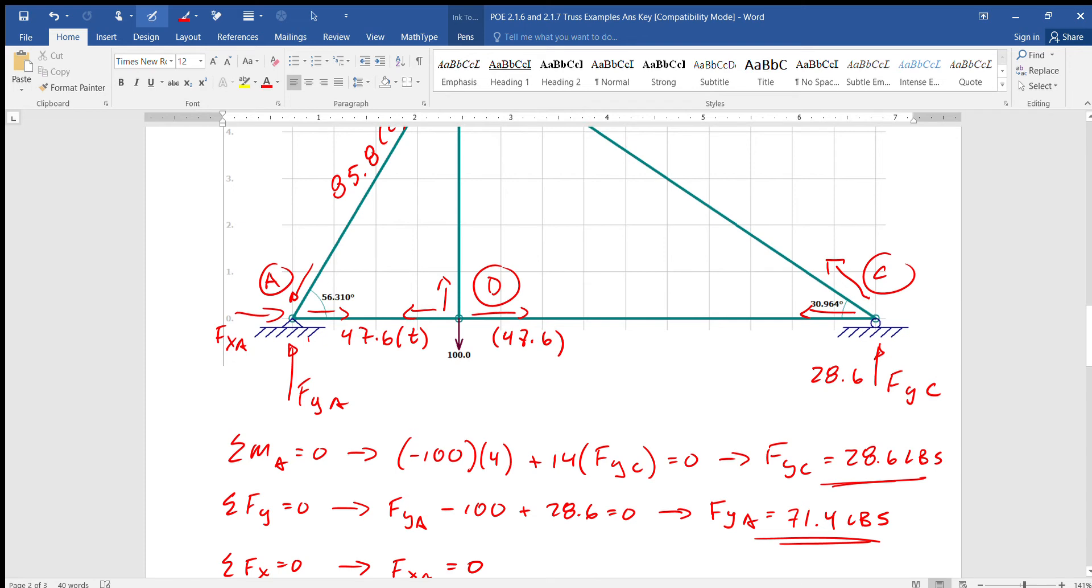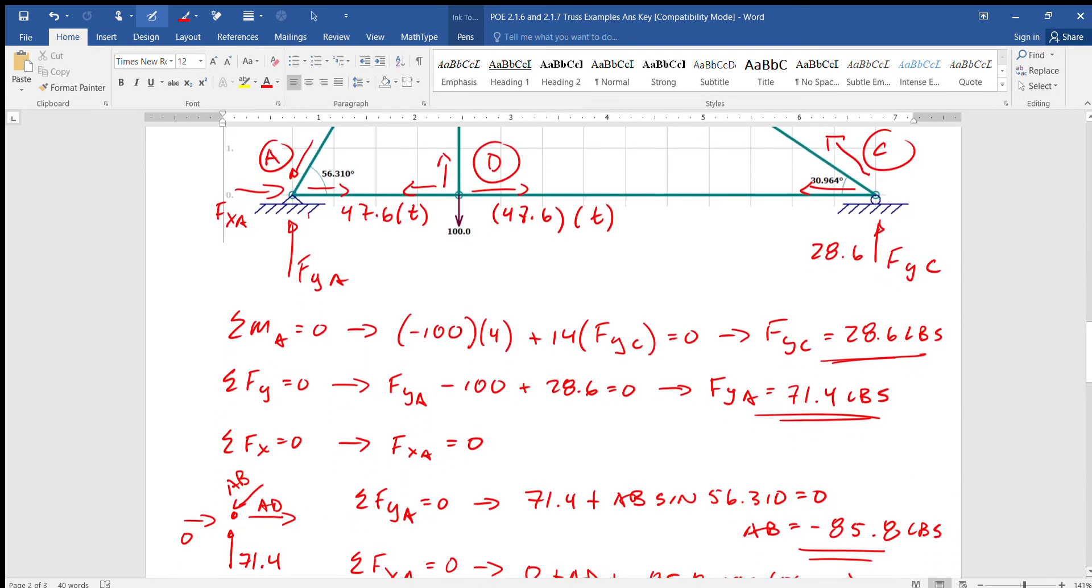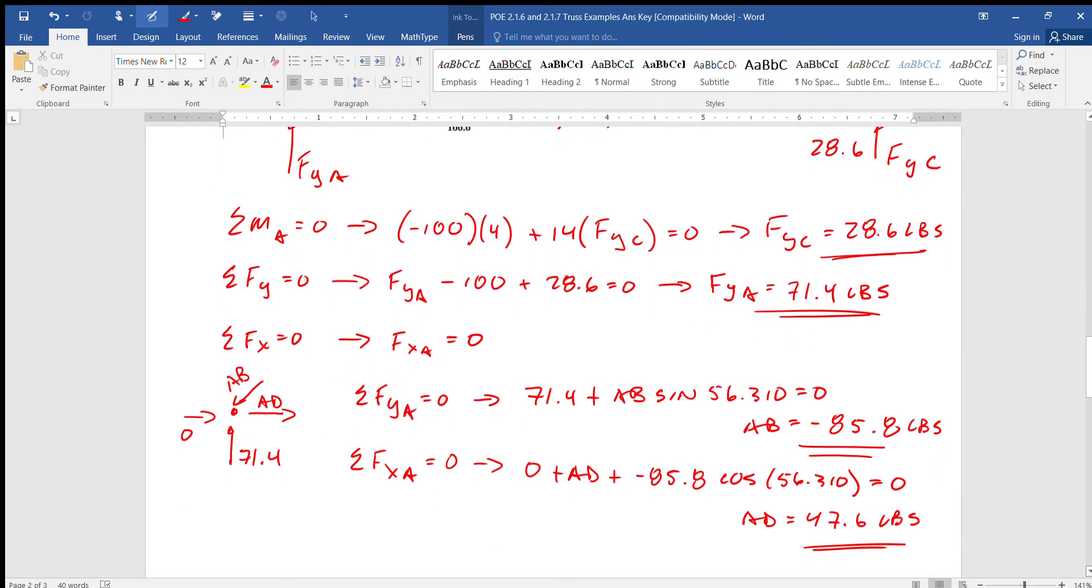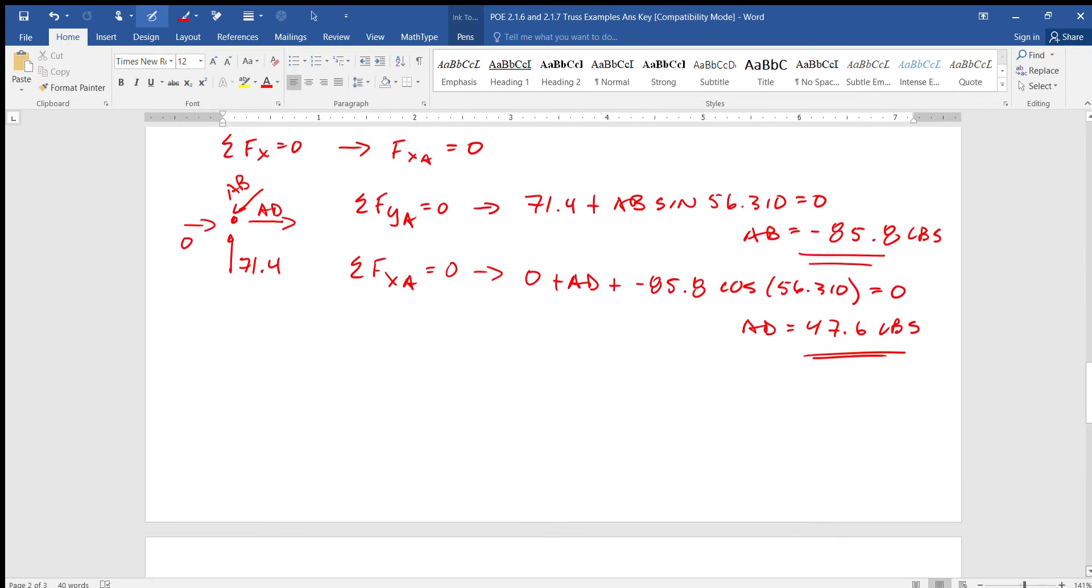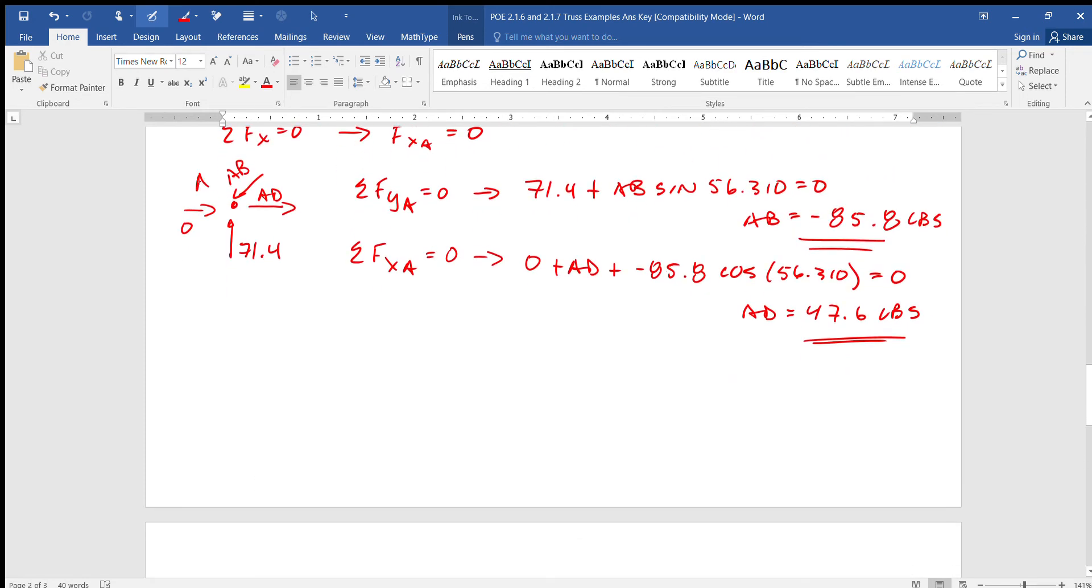Now I'll do D right here on the fly. If that's 47.6 then this has to be equal and opposite, it's 47.6. If this is 100 down then this has to be 100 and since the arrows didn't change, they're in tension. And now we can go over and do C.